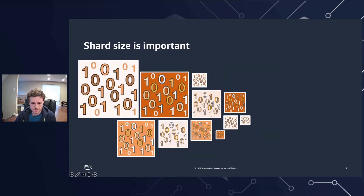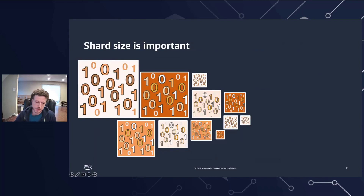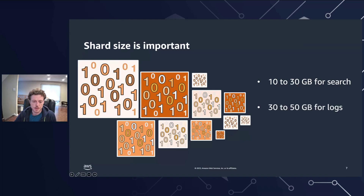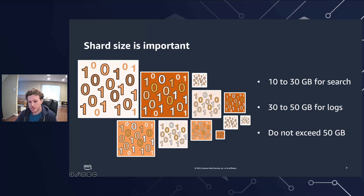Shard size is important as well. First, approximate your index size, then set a primary shard count such that each shard will be between 10 to 30 gigabytes for search workloads or between 30 to 50 gigabytes for time series workloads. Remember, 50 gigabytes should be your maximum shard size, and be sure to plan for growth rather than starting out with the maximum recommended shard size.